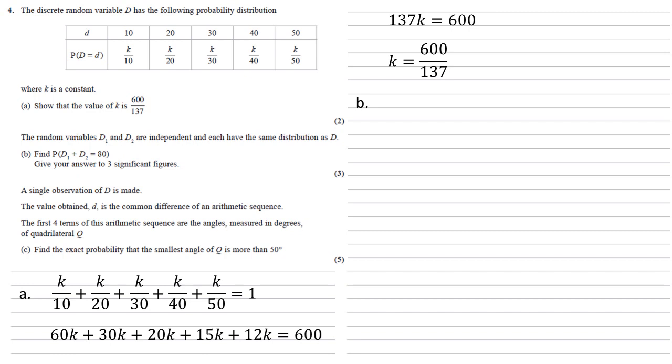For D1 and D2 to equal 80, there are three possibilities. Either D1 is 30 and D2 is 50, or D1 is 50 and D2 is 30, or both of them are equal to 40.